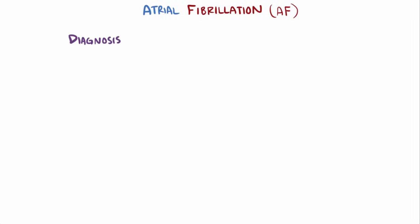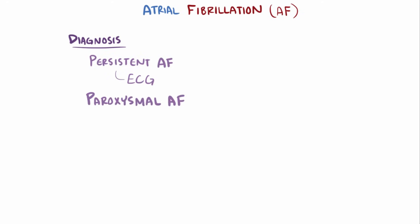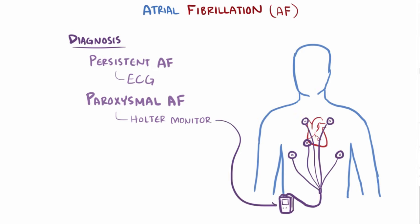Diagnosis of persistent AF is done by ECG, although if the episodes are paroxysmal but they're suspected, then someone might have a Holter monitor, which is a portable device placed on the chest that monitors their rhythm over longer periods of time and records potential AF events to be viewed later.